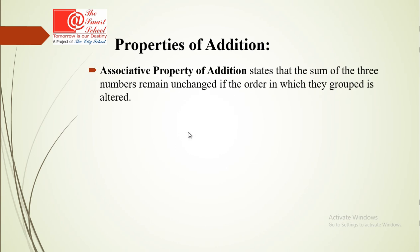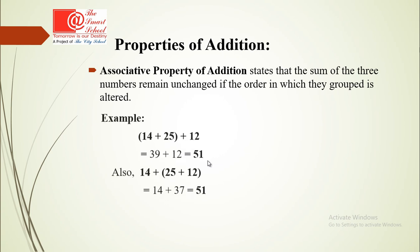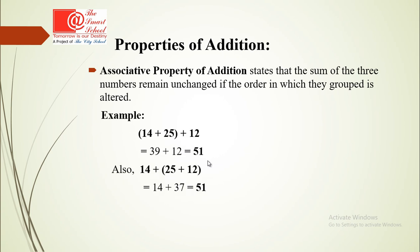The associative property of addition states that the sum of three numbers remains unchanged if the order in which the group is altered. For example, with numbers 14, 25, and 12: grouping 14 and 25 gives 39, and adding 12 gives 51. Grouping 25 and 12 gives 37, and adding 14 also gives 51. Both answers are the same, so associative property of addition is proved.